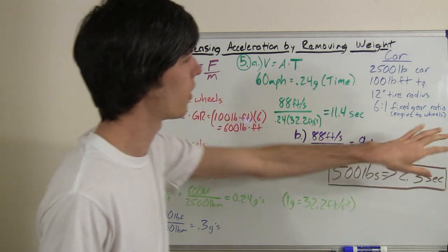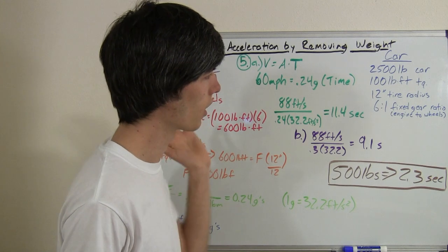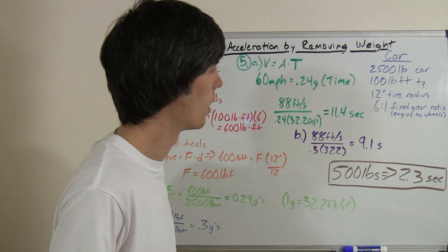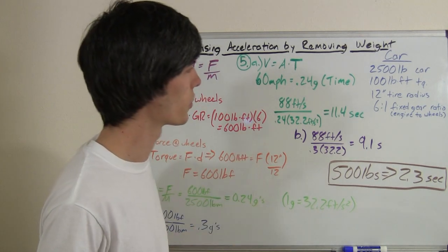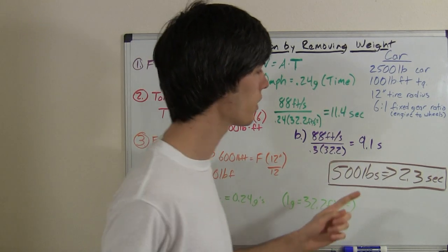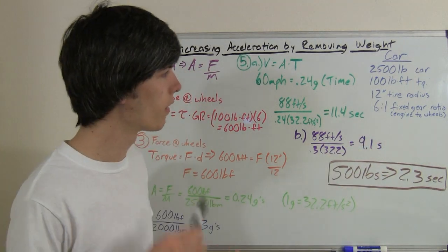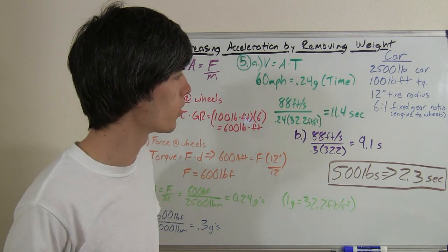So we're going to take a car, a 2,500 pound car. We're going to say it produces 100 pound feet of torque across the entire RPM rev line, which isn't realistic, but we're just going to simplify things. We're going to say it has a 12 inch tire radius, and we're going to say that it has a 6 to 1 final gearing ratio from the engine ending to the wheels.